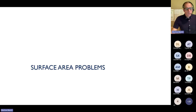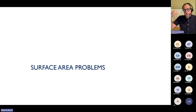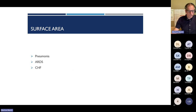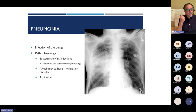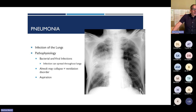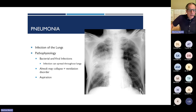Now we'll talk about problems related to the surface area of the lungs — not getting gas exchange because of a problem getting gas across the surface of the alveoli. Most common of those is pneumonia; we also see acute respiratory distress syndrome and a lot of CHF. Pneumonia is one of the most common things we see, and over the last three years we've seen much more viral pneumonia. A typical bacterial pneumonia shows a wedge on chest X-ray; viral pneumonia tends to show whiteness throughout the lungs. Patients can also get pneumonia from aspiration, particularly with swallowing problems.